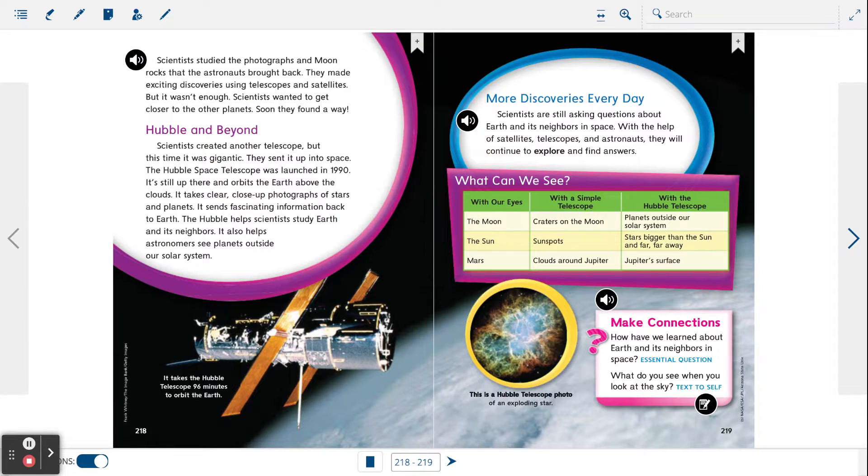Scientists studied the photographs and moon rocks that the astronauts brought back. They made exciting discoveries using telescopes and satellites. But it wasn't enough. Scientists wanted to get closer to the other planets. Soon, they found a way.